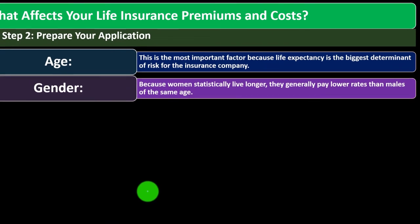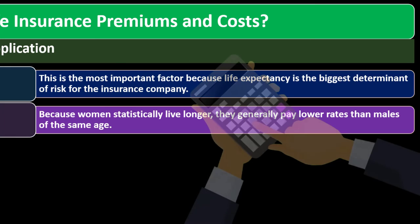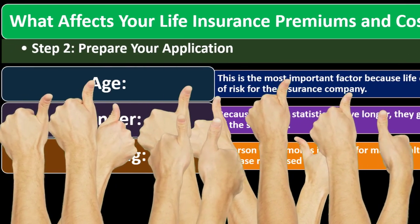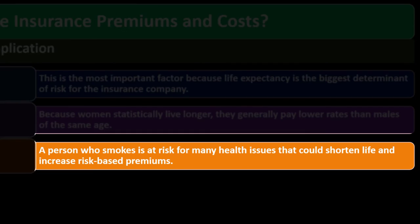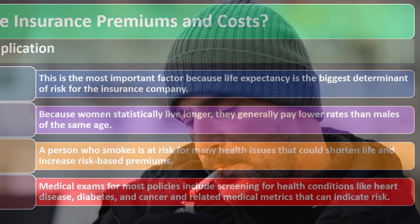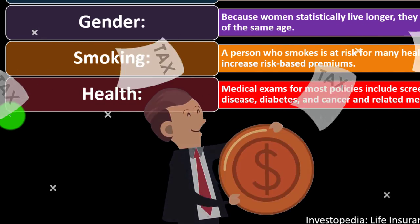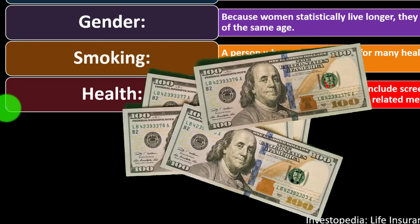Gender: because women statistically live longer, they generally pay lower rates than males of the same age. That makes sense actuarially — if women tend to live longer, that's good for life insurance calculations. Smoking: a person who smokes is at risk for many health issues that could shorten life and increase risk-based premiums. So if you smoke, they're going to increase your premiums significantly.